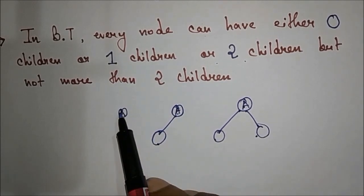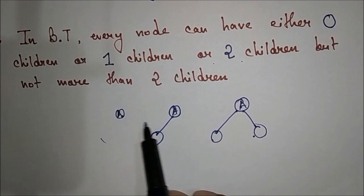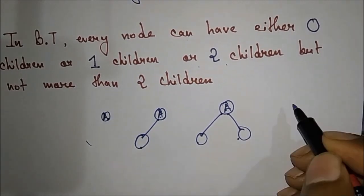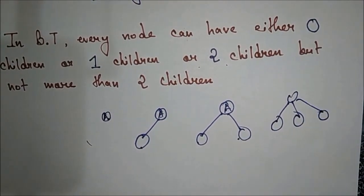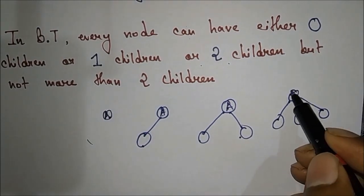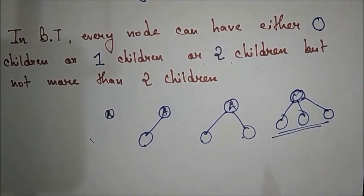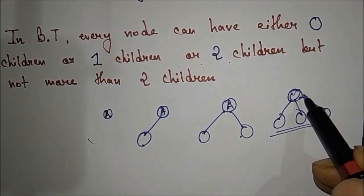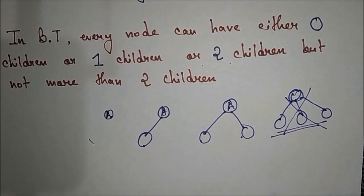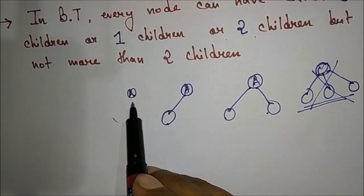For this node we have one child, and for node A we don't have any children, so all these three are binary trees. Now this one is not a binary tree because for this node we are having three children, which is not possible since the condition is 0, 1, or 2.